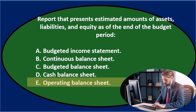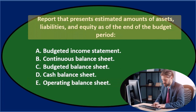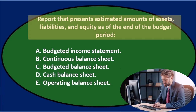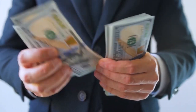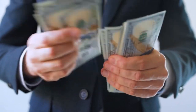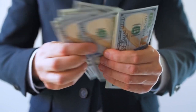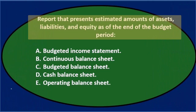Let's go through this again using the process of elimination. The report presents estimated amounts of assets, liabilities, and equity as of the end of the budget period. This should be very familiar because in normal financial accounting, when you see assets, liabilities, and equity, it should ring in your head that that's a balance sheet type of thing. The balance sheet, income statement — those are the main financial statements.